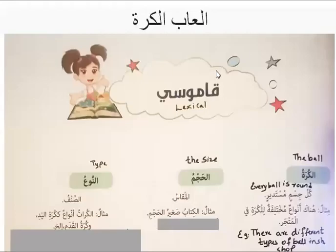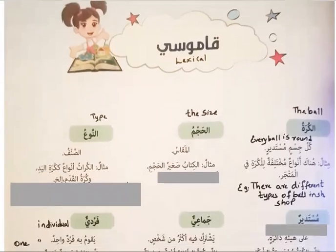This time we have Grade 5, first lesson for non-native speakers. In Arabic, we have Al-Aab Al-Quratu. Al-Aab Al-Quratu means the ball games. Here we don't have a picture dictionary. This time we have lexical, which means we have a written dictionary. All the words and text will be there, as well as sentences with examples given.